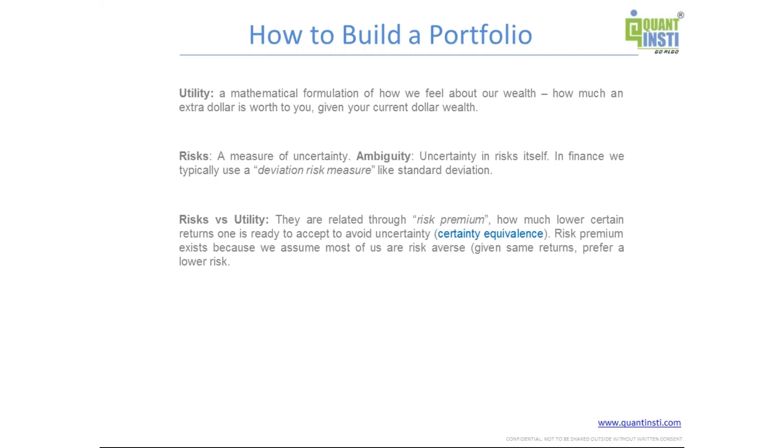So risk premium is something that tells us that given two scenarios where you get a certain payout in one option, and in the second option you have some risky payout - for example, in some cases you lose and in some cases you win, but on average you get the same payout. The risk premium tells that, based on our first assumption that people avoid risk, that assumption tells us that people will prefer the first option where it is a certain payout. And the risk premium measures how much less they're ready to take, how much less payout they're ready to take to go for the first option.